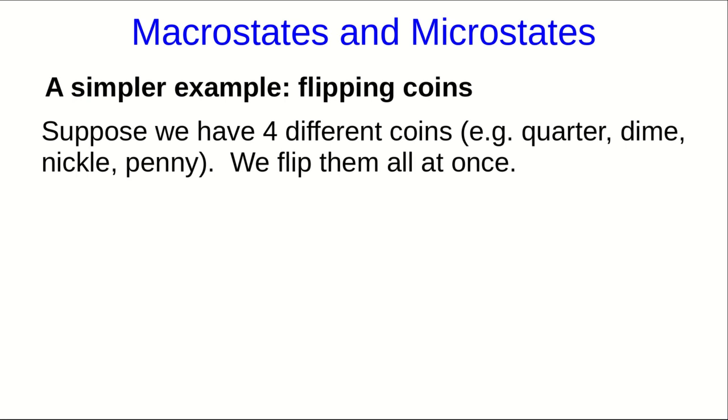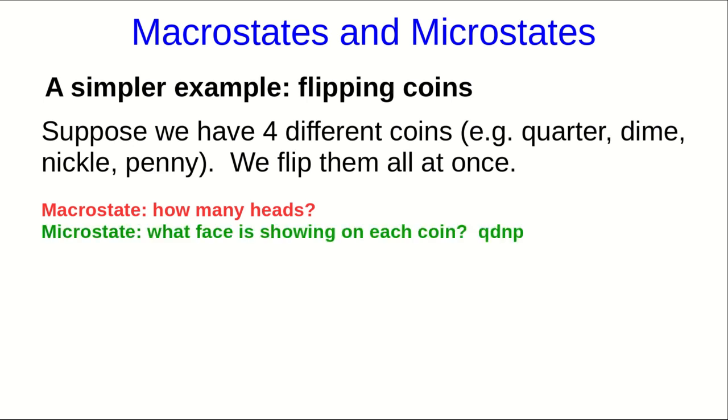Suppose we have four coins, a quarter, a dime, a nickel, and a penny, and we flip them all. What we'll describe as the macrostate of this system of coins is how many heads are showing. But the microstate will be the listing of what face is showing on each coin, and I'll order them in the order quarter, dime, nickel, penny.